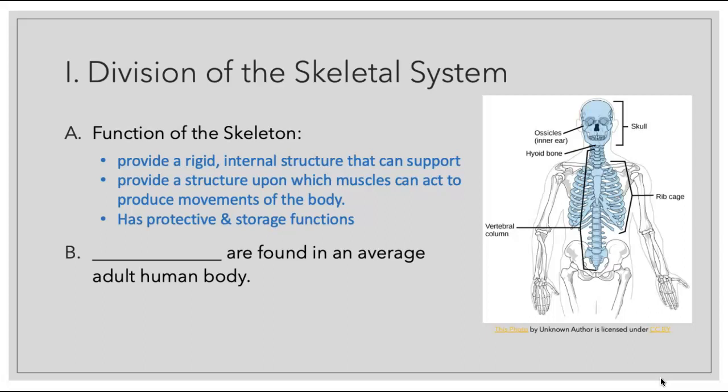We keep a rigid internal structure that can support all of the structures, and we're also going to provide a structure in which the muscles can attach to in order to produce movements of the body. It's also going to help with protection, especially with our vital organs — for instance the cranium protecting the brain and our ribcage protecting our heart and lungs — and also helps with storage functions, for instance having calcium phosphate within our bones.